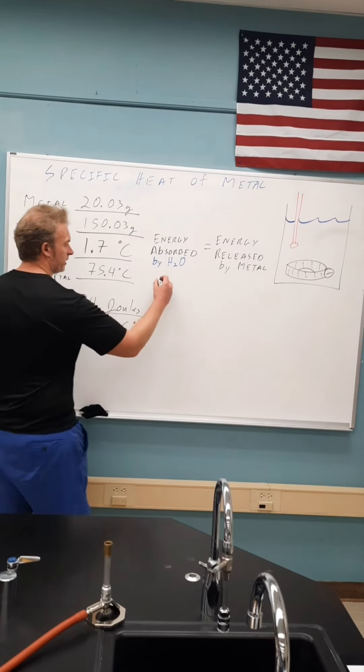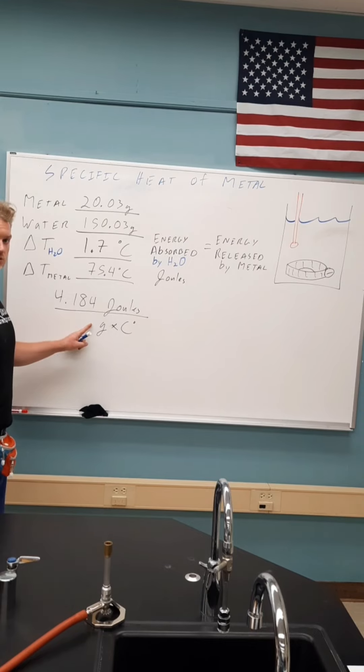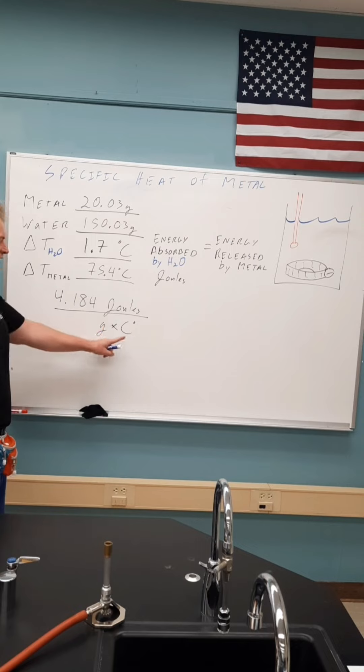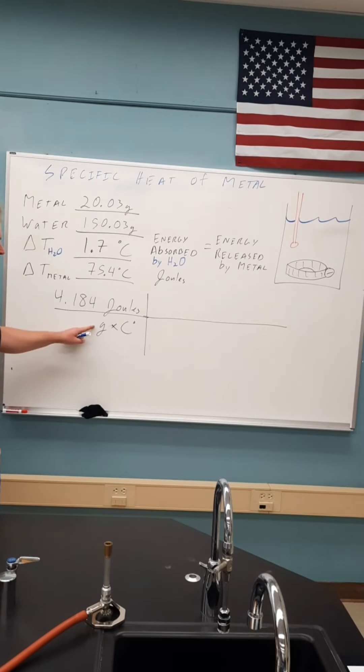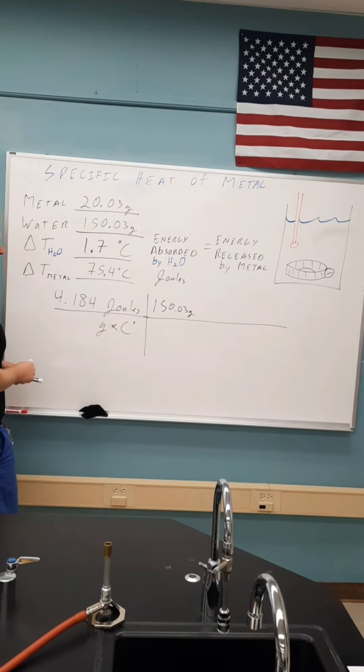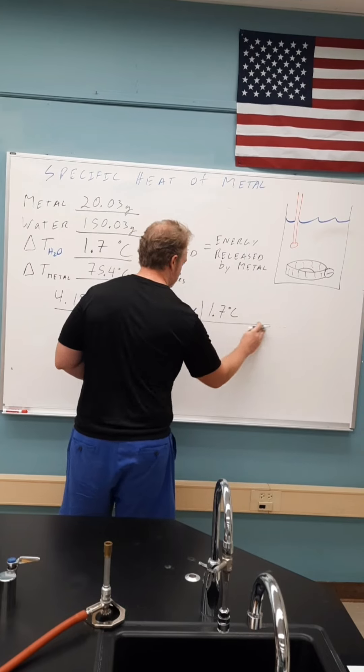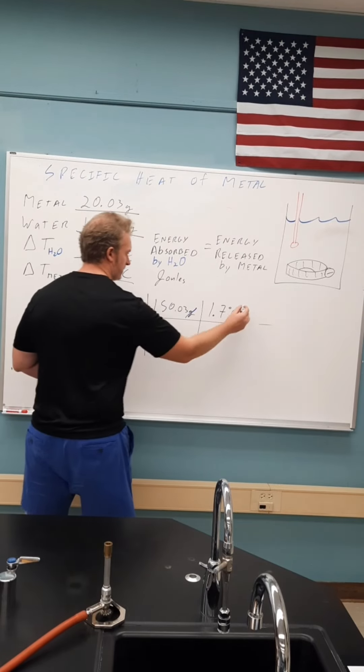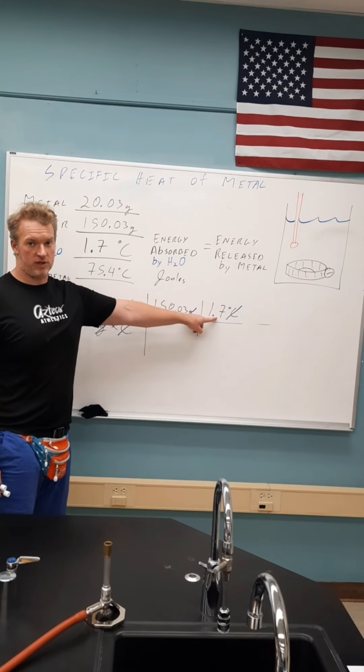The energy absorbed by water is in joules. So we need to use this scaffold to cancel everything except for joules. We want to make sure we use grams of water and degrees Celsius because this is all about water. Well I happen to have 150.03 grams of water, so using from my shopping list, and it had a temperature change of 1.7 degrees Celsius. Everything cancels and this would tell us the energy that was absorbed by the water. And note that everything in here is about water. Nothing is about the metal.